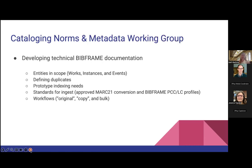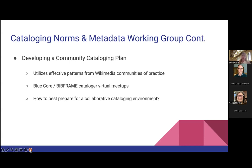Cataloging norms and the metadata working group are developing technical BibFrame documentation for use in the system. They're outlining the entities and scope for BlueCore, which today include works, instances, and events. They're defining duplicates and how a duplicate would be flagged within a shared system. They're outlining the indexing needs for the prototype, defining standards for ingest such as approved MARC 21 conversions — namely the LC converter — and appropriate metadata application profiles, specifically the BibFrame PCC profiles. They're also looking at workflows for original, copy, and bulk cataloging at a high level.